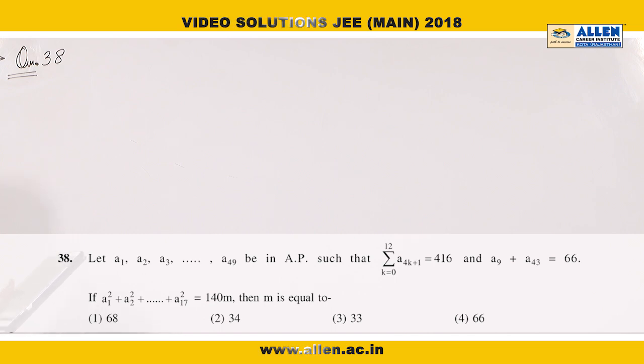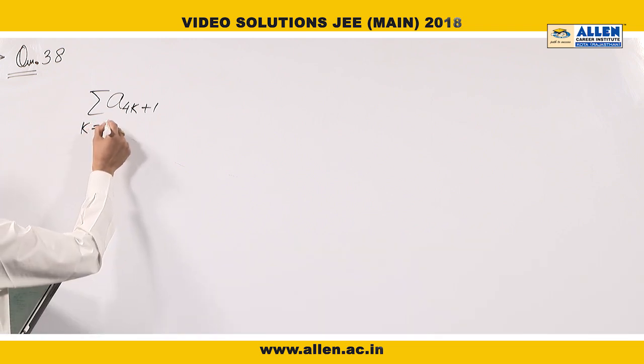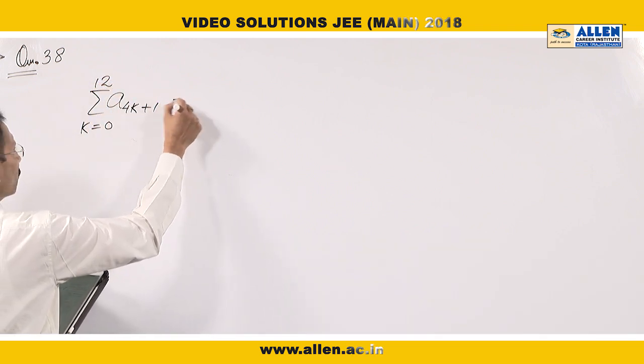We have been given summation a_{k+1}, 4k+1, k is from 0 to 12 equals to 416.